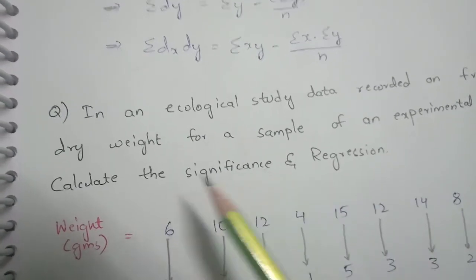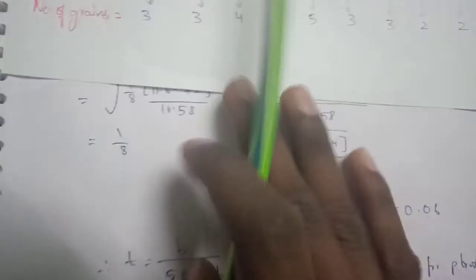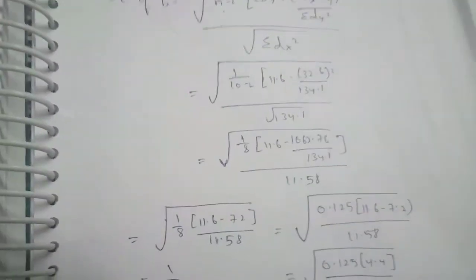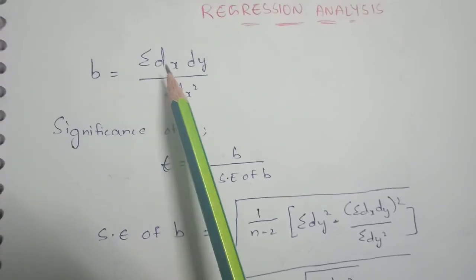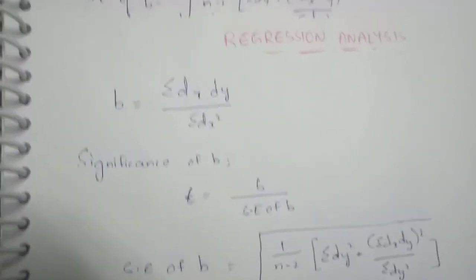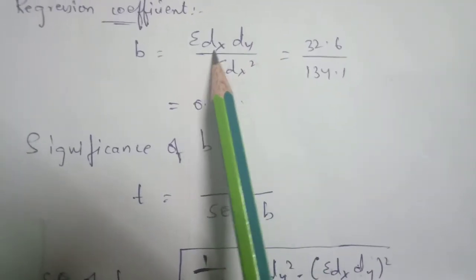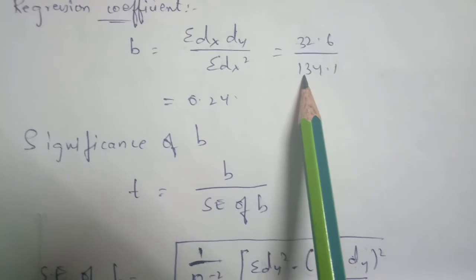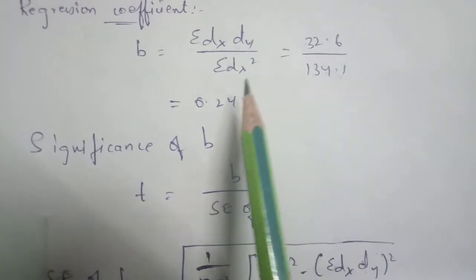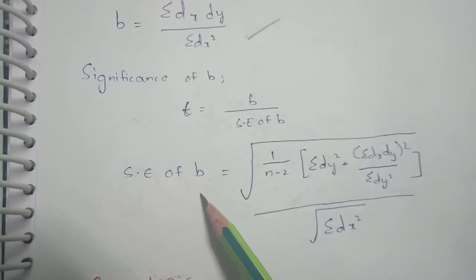Now calculate the regression coefficient. B equals Sigma DX·DY divided by Sigma DX squared, which is 32.6 divided by 134.1. The regression coefficient B equals 0.24.